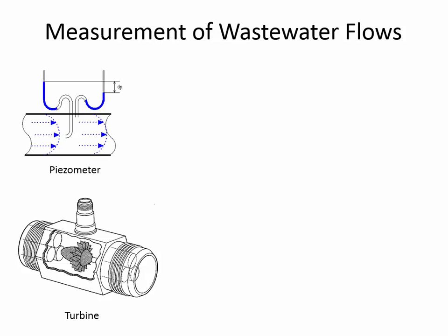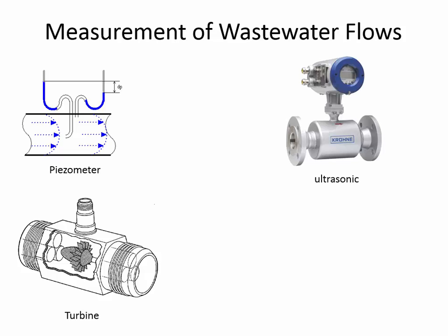A turbine flow meter overcomes some of those limitations. As shown in this depiction, there's a propeller inside the pipe that spins faster with increasing flow rate. Before it's put into service, a curve is made relating the rotational rate of the turbine to the average velocity inside the pipe. The manufacturer gives you a chart saying how quickly it's spinning versus the flow rate. The advantage is you can measure remotely, record data over time — it's much more sophisticated than a piezometer.